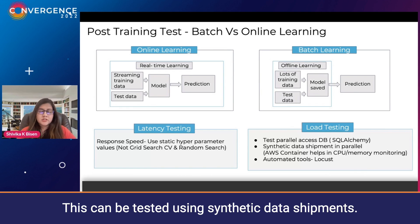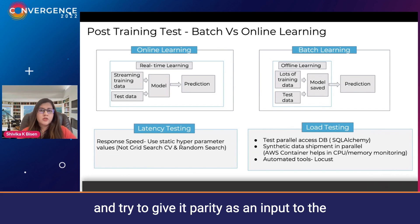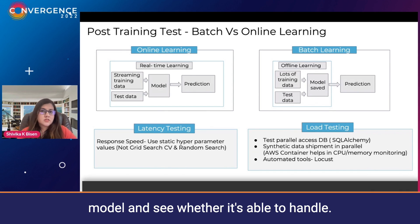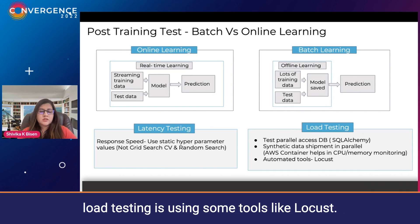This can be tested using synthetic data shipments — you can create synthetic data shipments and give them in parallel as input to the model to see whether it's able to handle them. Another way to automate such load testing is using tools like Locust.